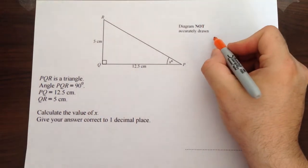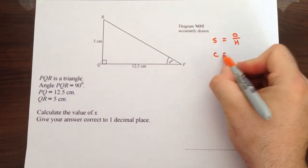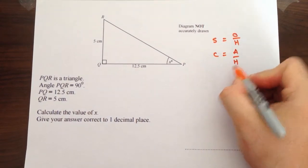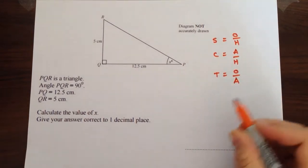So you need to write down your equation. So some old hags can always hide their old age. That'll be handy in a minute.